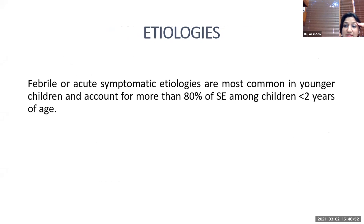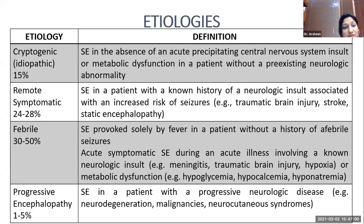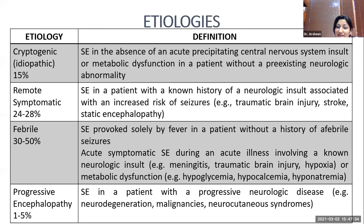There are various etiologies, among which febrile or acute symptomatic etiologies are most common in children, accounting for more than 80 percent of cases. In children under two years, etiologies are classified as cryptogenic, accounting for 15 percent, defined as absence of acute CNS disease or metabolic dysfunction without pre-existing abnormality. Remote symptomatic status accounts for 24 to 28 percent. Febrile is the most common, accounting for 30 to 50 percent. Acute symptomatic status can be associated with meningitis, traumatic brain injury, or hypoxia, and metabolic dysfunctions like hypoglycemia, hypocalcemia, and hyponatremia. Progressive encephalopathies include neurodegenerative disorders and account for one to five percent.